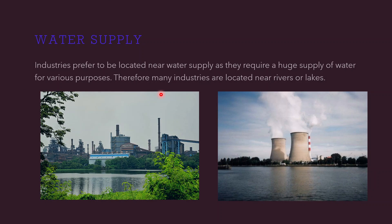Industries require a large amount of water for several purposes like cooling and washing. Industries such as iron and steel, paper, and textile have huge demands for water. A nuclear power station also requires a huge amount of water for use as a coolant. Therefore, such industries prefer to be located near rivers or lakes where there will be an uninterrupted flow of water.